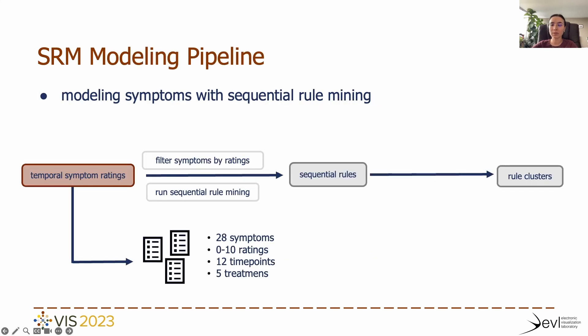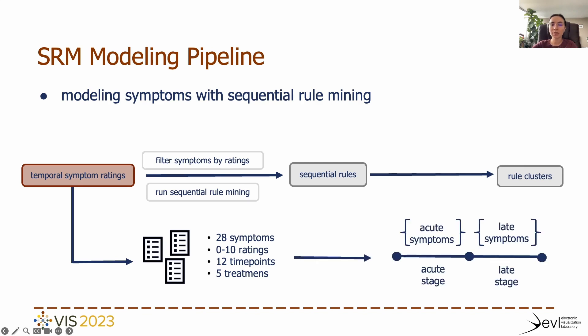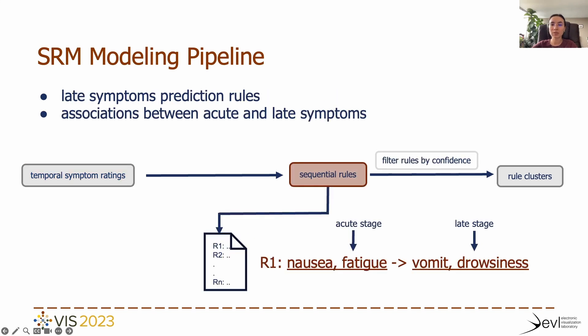Our main goal is to predict long-term symptoms so that treatment decision-making can be improved. We use sequential mining to predict late symptoms based on acute symptoms, performing this for each existing treatment separately to account for treatment-specific symptoms. Our symptom modeling pipeline starts with the symptom ratings reported by patients at several time periods during the acute and late stages. We only consider medium to severe symptoms to minimize patient inter-variability and focus on symptoms that affect quality of life. Following the two-stage monitoring protocol used by oncologists, we use two-stage symptom sequences for the sequential mining model.